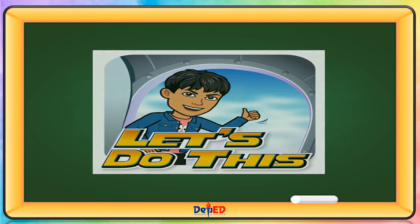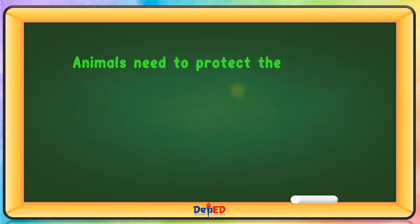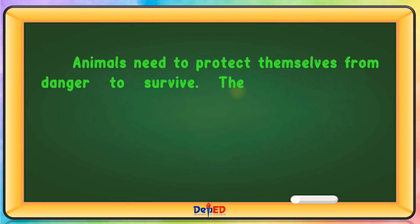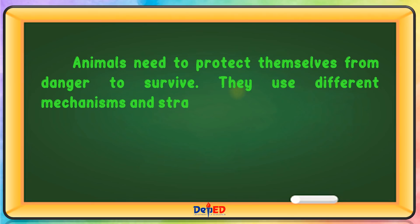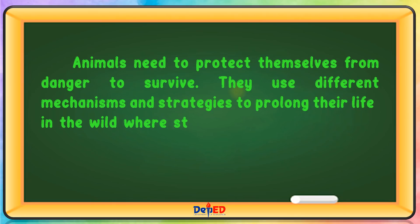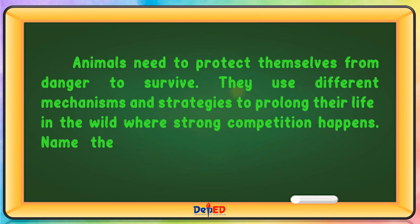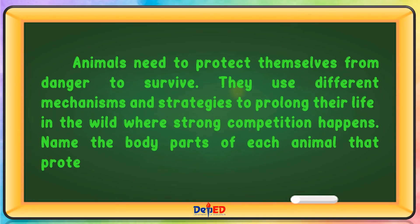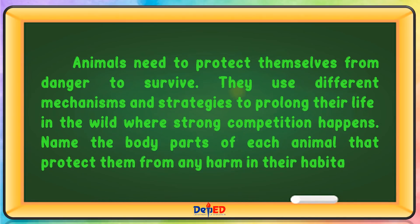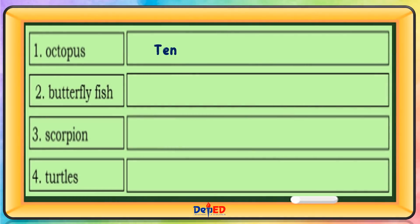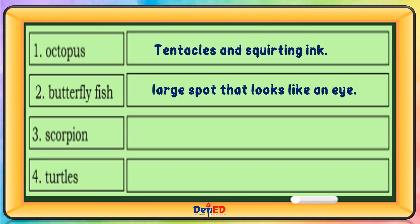Let's do this! Animals need to protect themselves from danger to survive. They use different mechanisms and strategies to prolong their life in the wild where strong competition happens. Name the body parts of each animal that protect them from harm in their habitat. Octopus: tentacles and squirting ink. Butterfly fish: large spot that looks like an eye. Scorpion: pincers or venomous stinger. Turtle: hard shell.